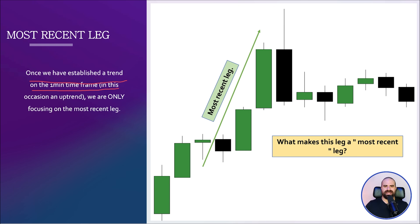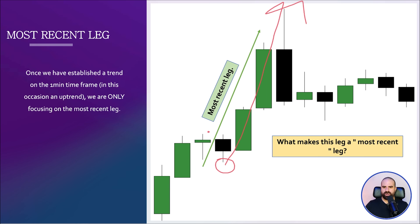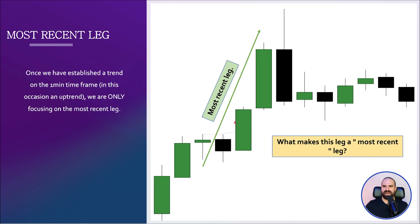Once we have established the trend on the one-minute time frame — in this occasion an uptrend — we are focusing only on the most recent leg. A new leg is created when we see a low being formed and then a new push. This low is valid because it is lower than the low of the candlestick to its right and lower than the low of the candlestick to its left. Similarly, a high is valid because it is higher than the high to its right and higher than the high to its left. When that high gets broken, pay attention to these tiny details.